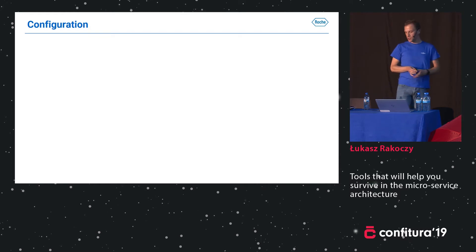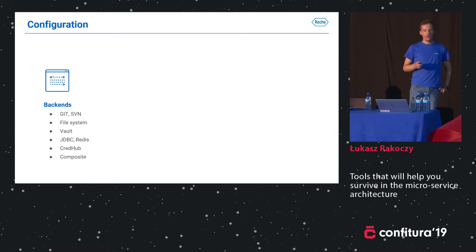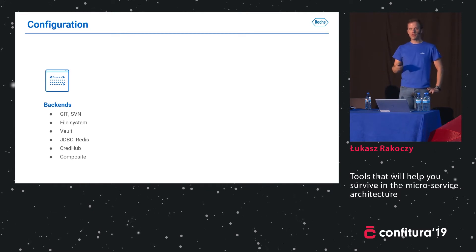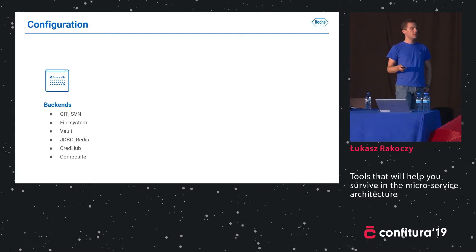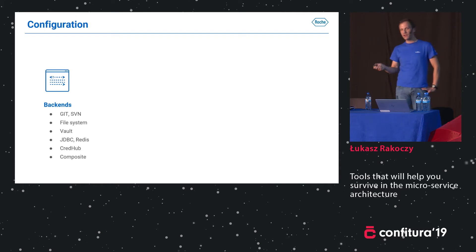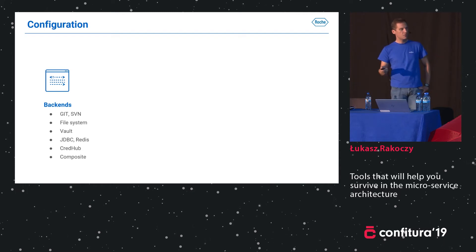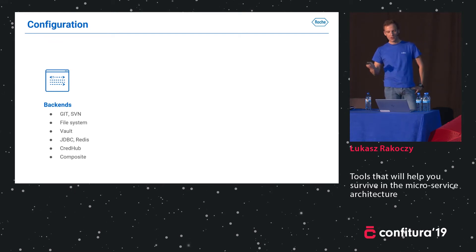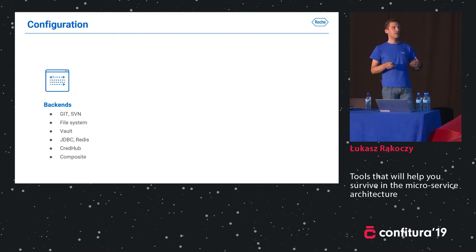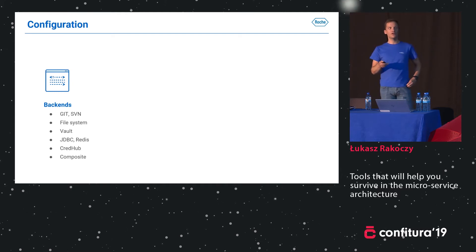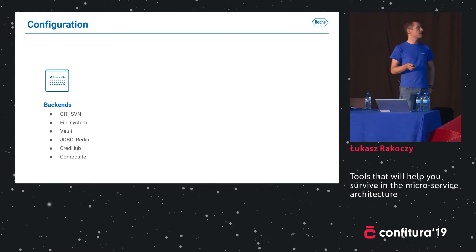We have configuration options — our properties can be stored in different types of backends. Usually it's a source control management system like Git or SVN, but it can also be a file system, which is useful for local development. It can be HashiCorp Vault, which is a convenient way to store secrets. It can be JDBC, Redis — more of a database approach. It can be CredHub from Cloud Foundry. And you also have the option to compose these backends, setting different priorities — for example, first try the database, and if you can't find it, fall back to SVN or Git. It all depends on your requirements.